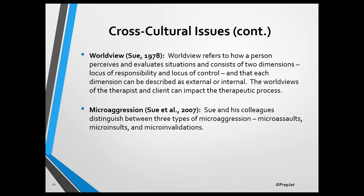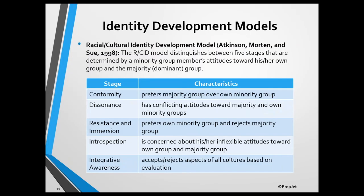Next we're going to take a look at some identity development models. There are three that get asked about most commonly on the exam. The first one is Atkinson, Morton, and Sue's Racial Cultural Identity Development Model.